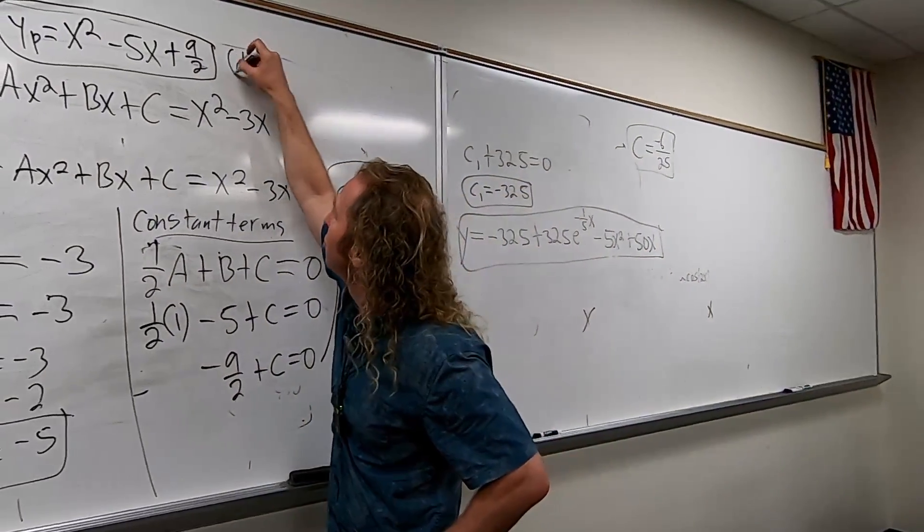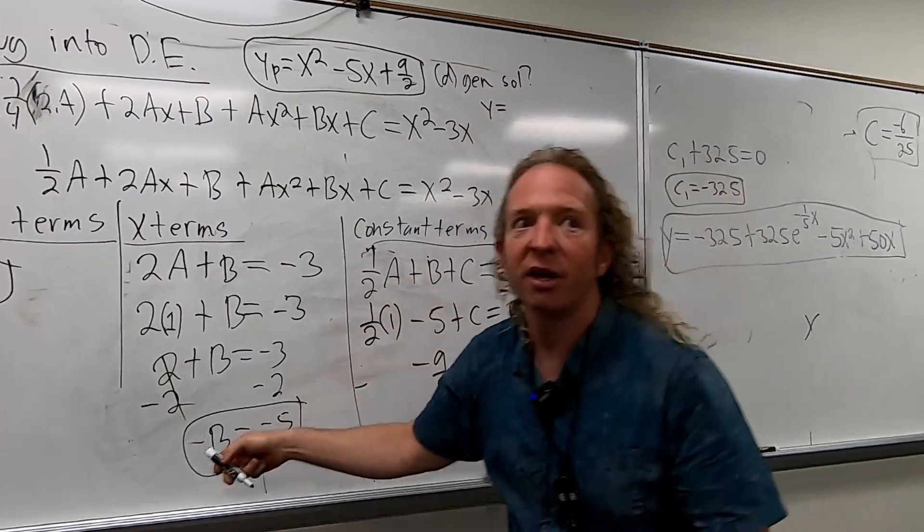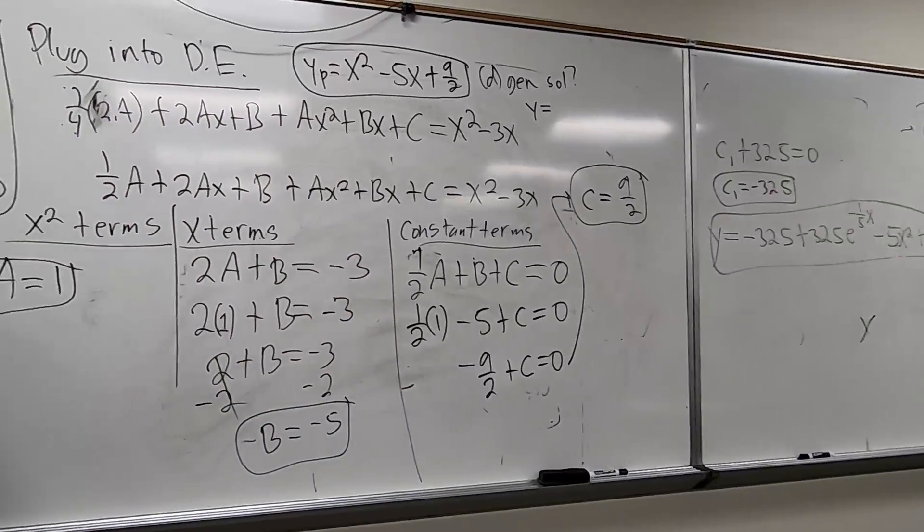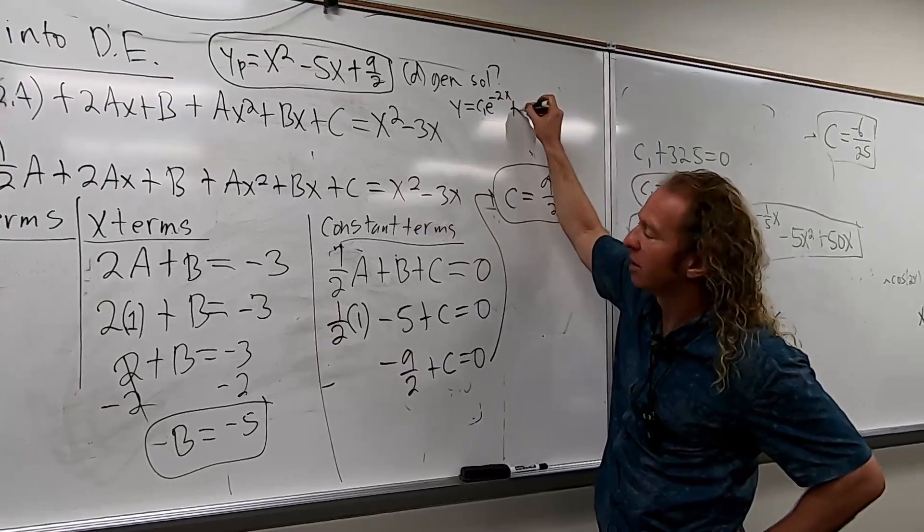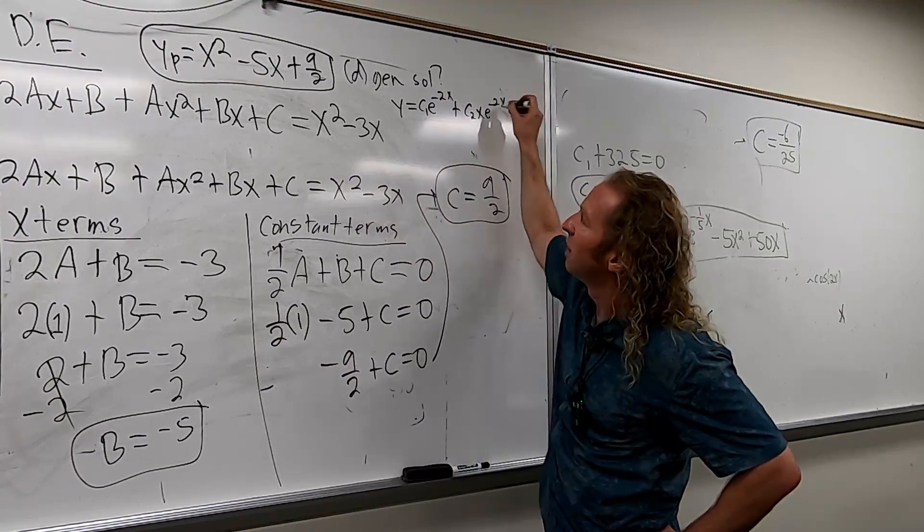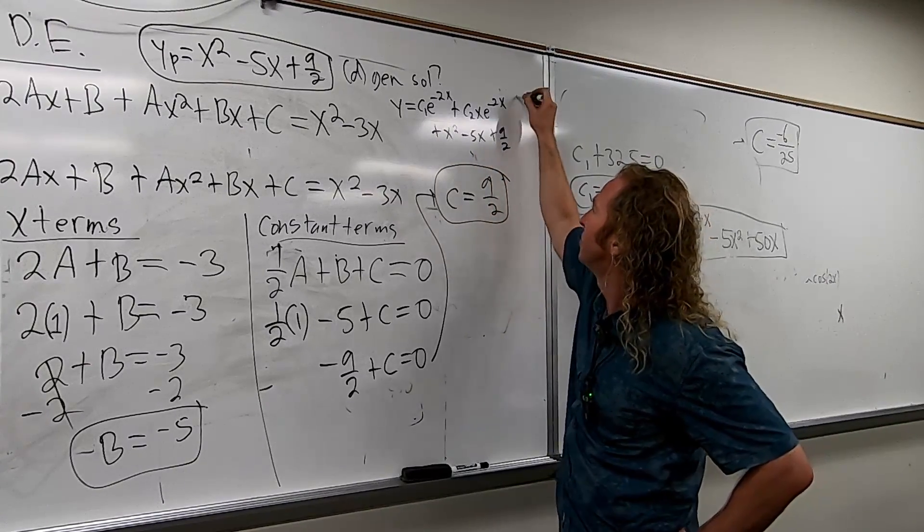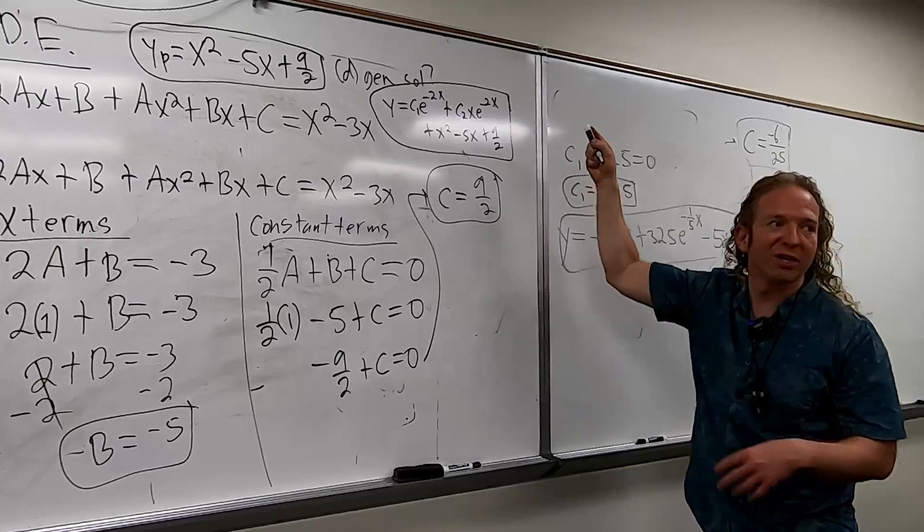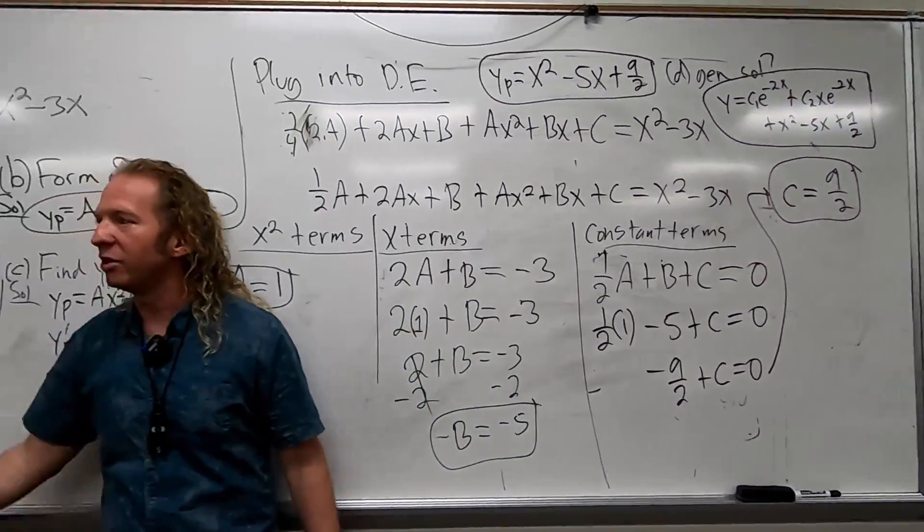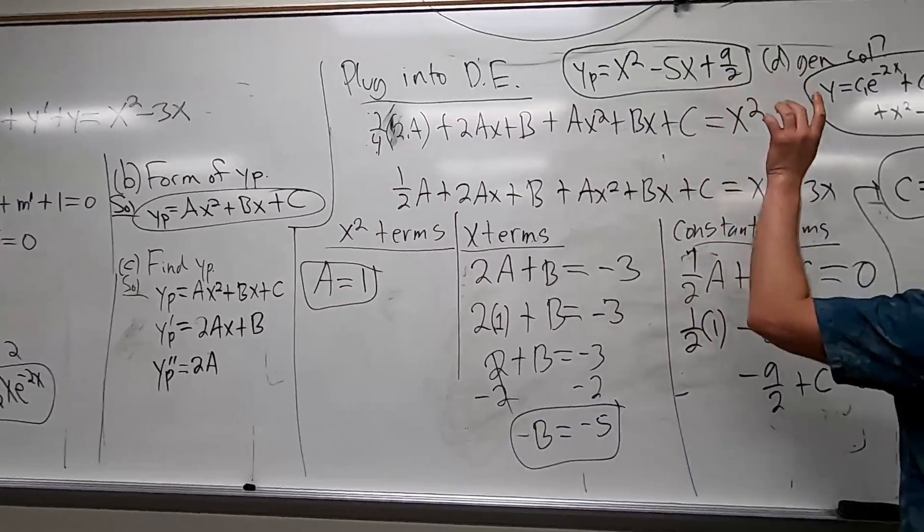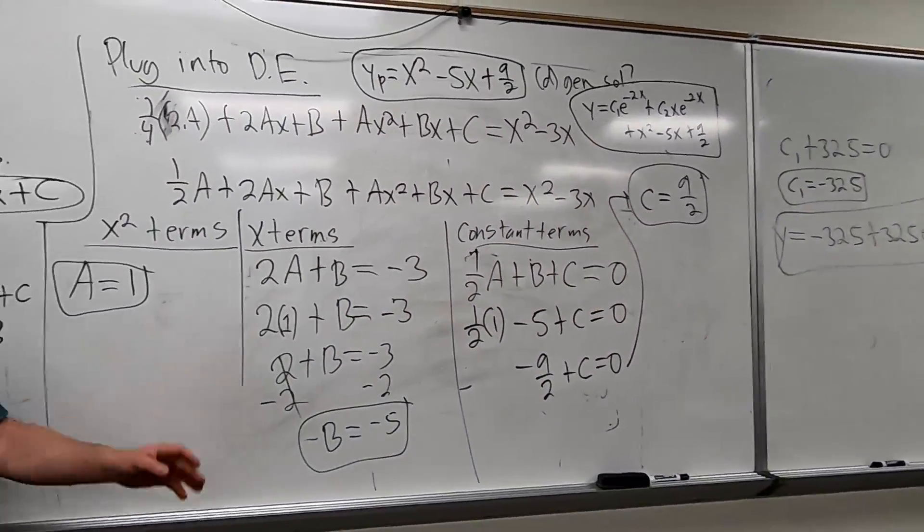The last step is to write the general solution. And so you just basically add them up. So you take your YC, so C1 E to the negative 2X plus C2 X E to the negative 2X and then plus X squared minus 5X plus nine halves. So this would be the actual answer at the very end. You just take the YC, which is here, and you add it to the YP, which is here. So it wasn't so bad. Next time when you come in, well, any questions?